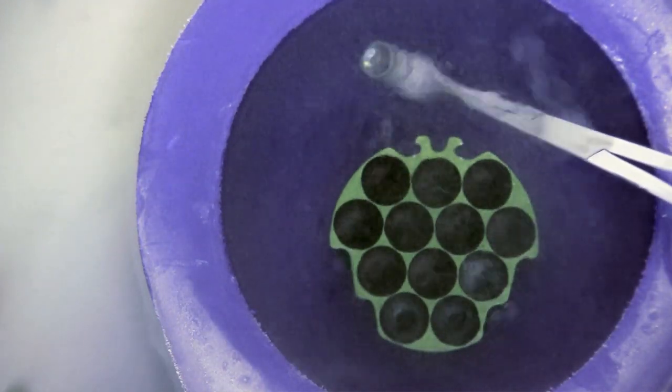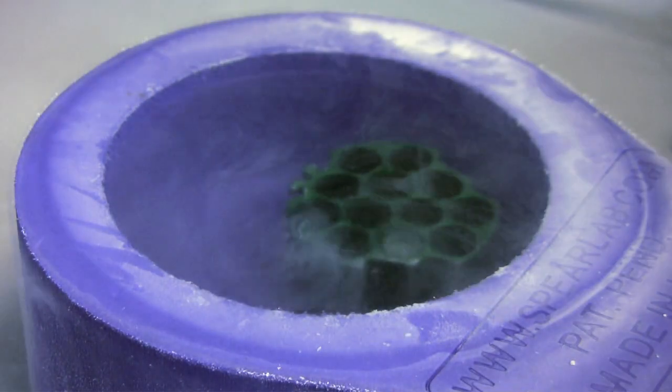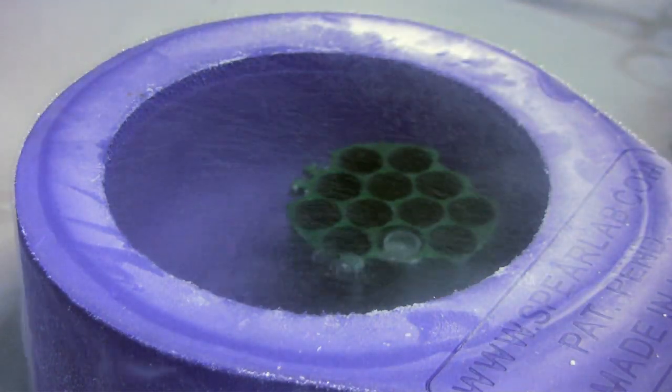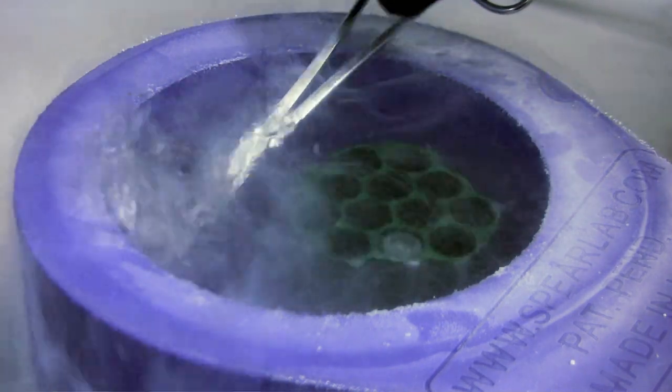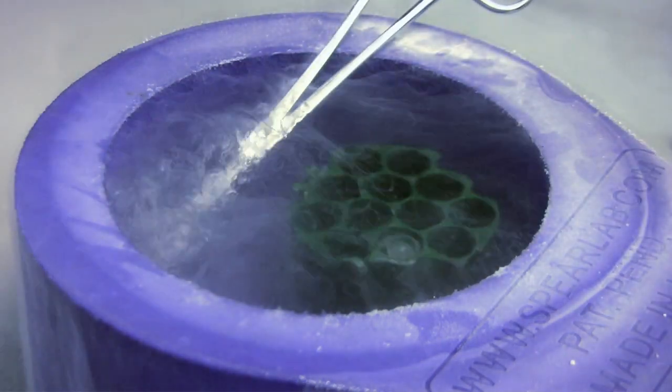After loading, ensure the vial is filled with liquid nitrogen and then quickly inverted by hand into the puck. The LN2 in the vial protects the sample during this maneuver. You may want to practice this a few times before using real samples.